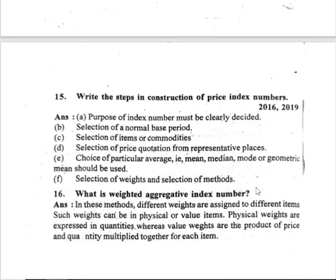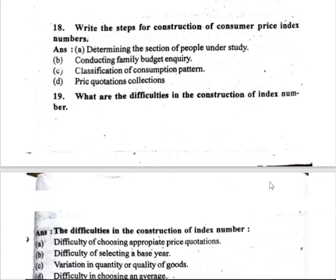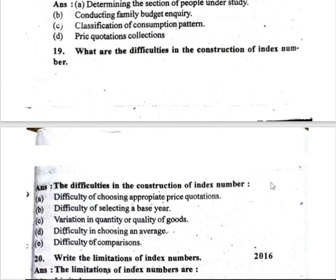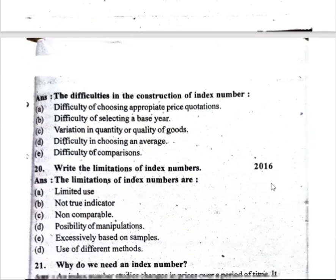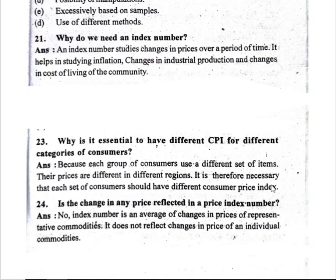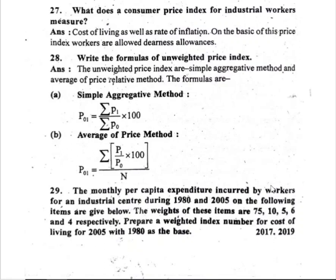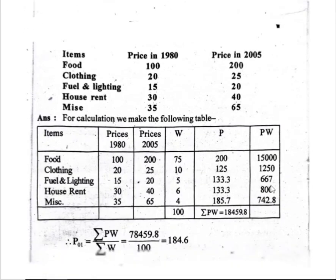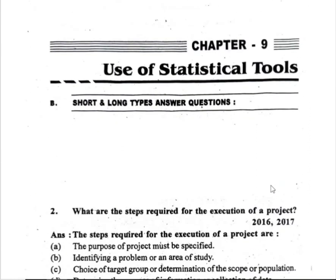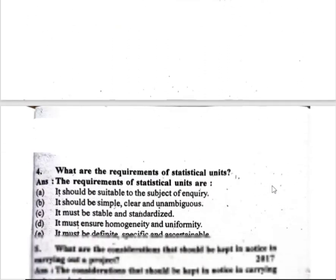Write the steps in the construction of a price index number. What is the difficulty in the construction of index numbers? Write the limitations of index numbers — very important. Write the formula for the weighted price index number — very important. Chapter: use of statistical tools. Questions 2, 4, and 5 are very important.